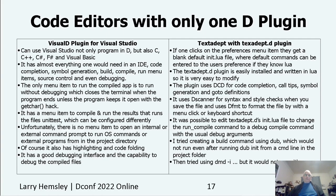Carrying on, we're going to talk about code editors with only one D plugin, identified by the plugin used. The first is the Visual D plugin for Visual Studio, which comes with the Windows installation of DMD. It has everything you'd expect from an IDE, except the only menu item to run the compiled app is to run without debugging, which closes the terminal after the console app ends — unless you keep the app open with the well-known getchar function hack. It has no terminal to run OS commands or external programs, but it has everything else a good IDE has, including one of the better debuggers.